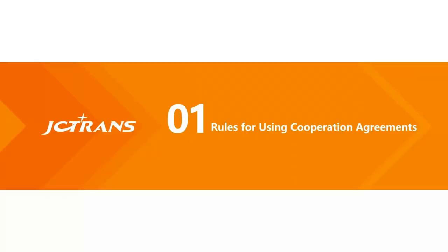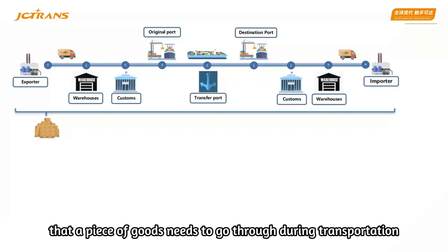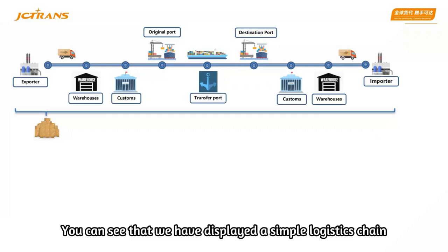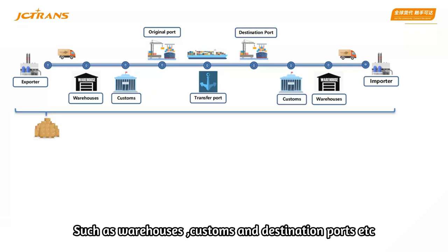The first part: rules for using cooperation agreements. The logistics part can be divided into nodes that a piece of goods needs to go through during transportation. We have displayed a simple logistics chain where each node represents the corresponding work content, such as warehouses, customs, and destination ports, etc.